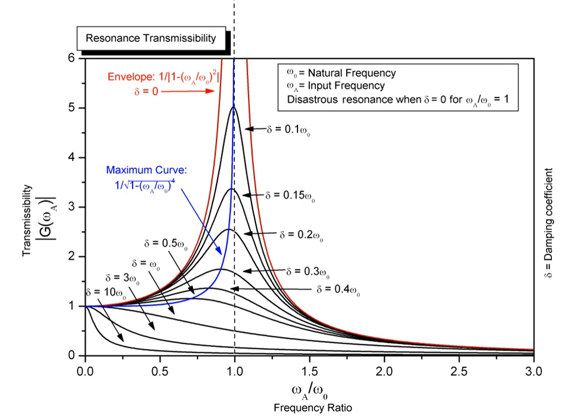Resonance describes the phenomena of amplification that occurs when the frequency of a periodically applied force is in harmonic proportion to a natural frequency of the system on which it acts. When an oscillating force is applied at the resonant frequency of another system, the system will oscillate at a higher amplitude than when the same force is applied at other non-resonant frequencies.